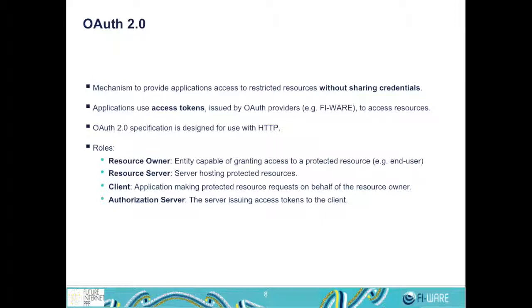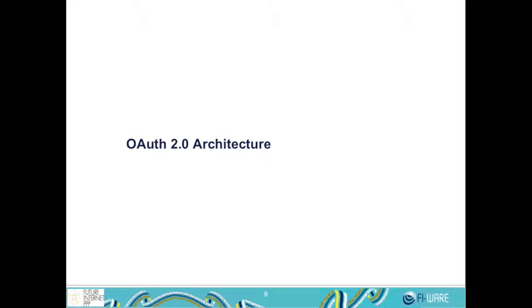OAuth 2.0 is designed to be used with HTTP requests and there are four different players: the resource owner, which typically is the user who wants to grant access to a protected resource; the resource server, which is the place where the resource is hosted; and the client, which is the application that accesses the protected resource on behalf of the resource owner using access tokens. OAuth 2.0 can be used in four different scenarios, which imply different messages to exchange the access token depending on the nature of the client. I will explain the architecture of these scenarios in FIWARE.